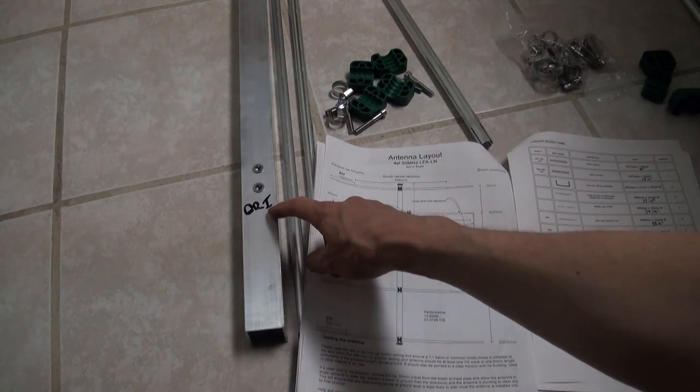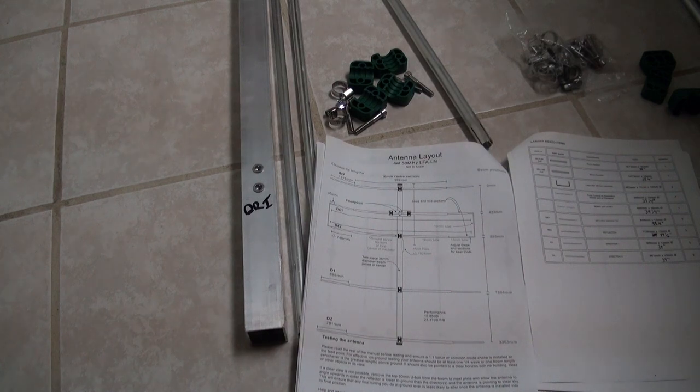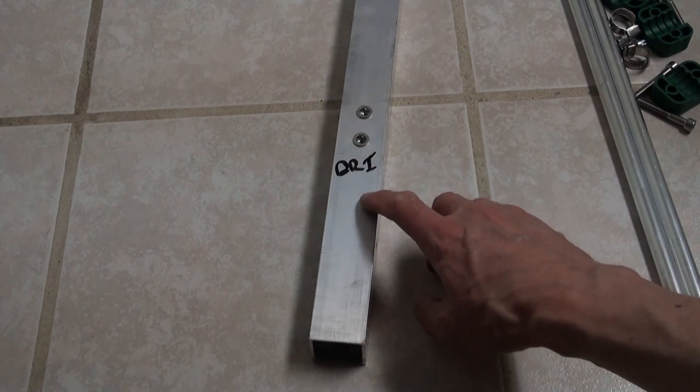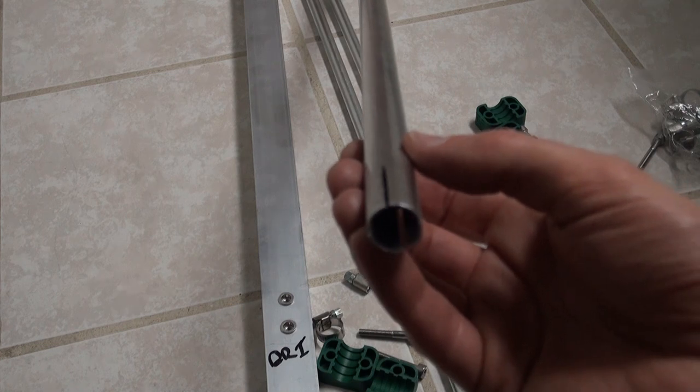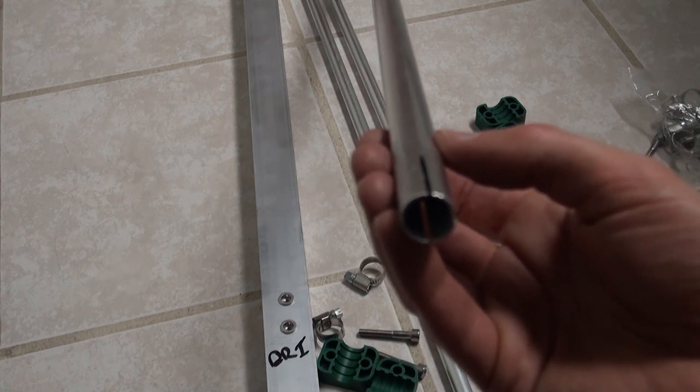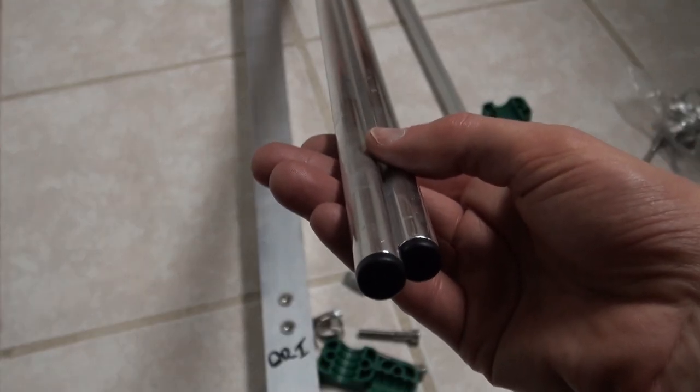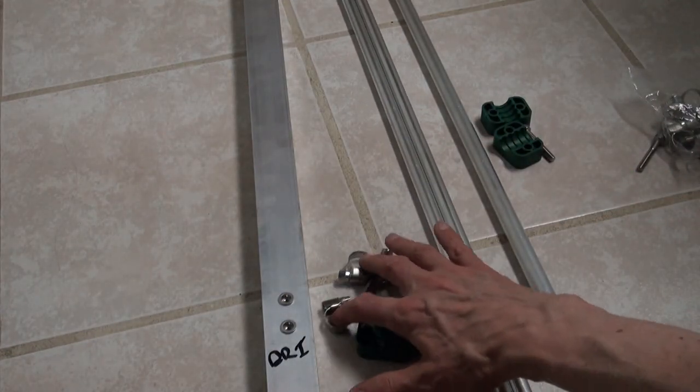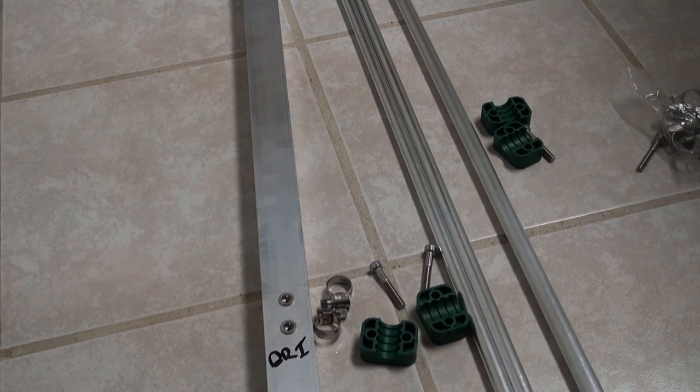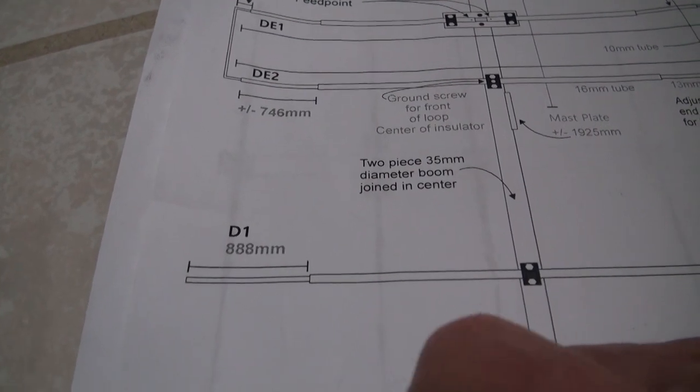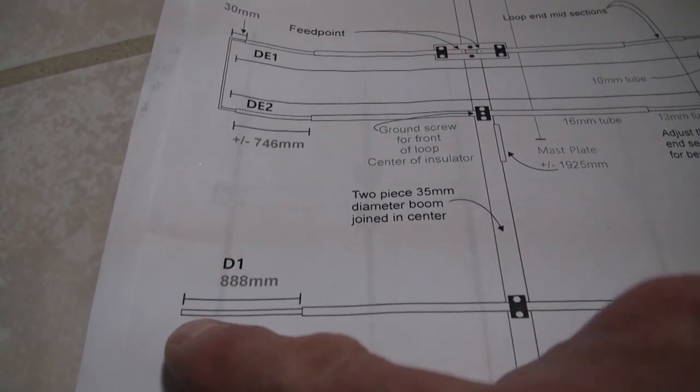The build for director one is almost identical to the build for director two, so I'm not going to show that process on video, but I am going to touch base on the differences. First off, director one is located on the longer of the two boom sections towards the open end. The very opposite end of this would be where the reflector goes. Although it uses the same center element, 998 millimeters or 39 and a quarter inches long, it does use longer elements for the completion of director number one. And these are 988 millimeters or 39 inches long. Otherwise, it's going to use the same plastic insulators, same jubilee clips, and same bolts as director two. The element tip length for director number one should be 888 millimeters or approximately 35 inches. And that's the distance from the end of the center section to the end of the element tube.